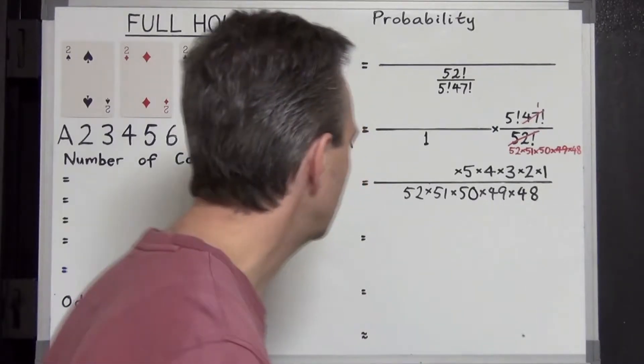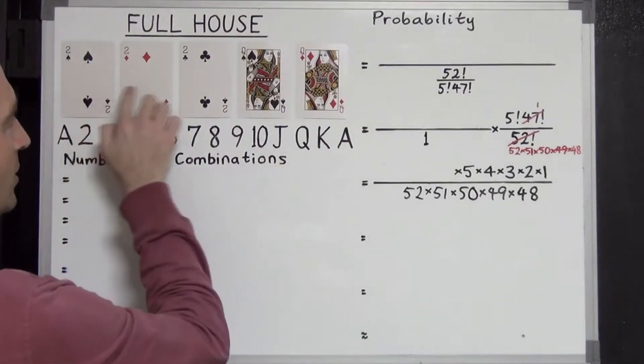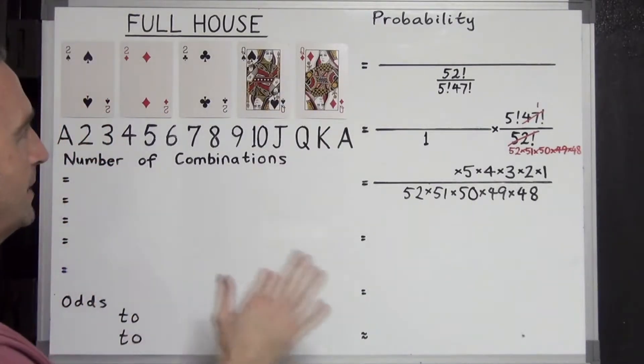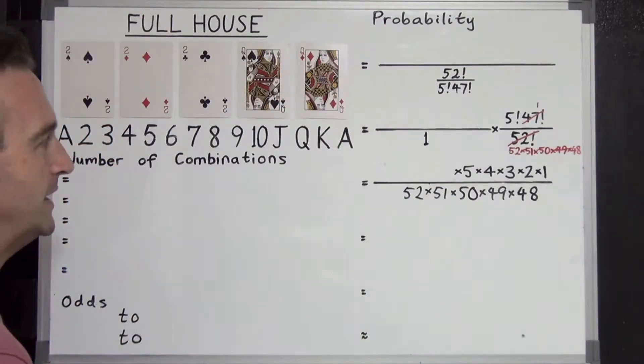So what is a full house? A full house is when you get three of a kind of one rank and two of a kind of another, and that's it. Five cards made up in that way. So how many combinations are possible for a full house?